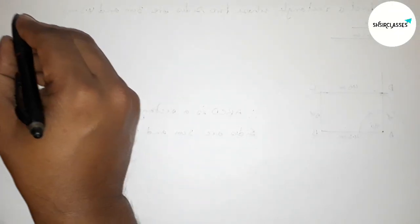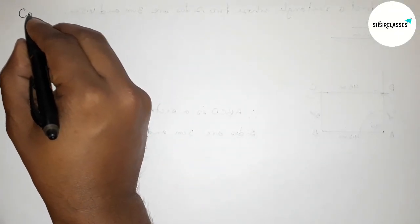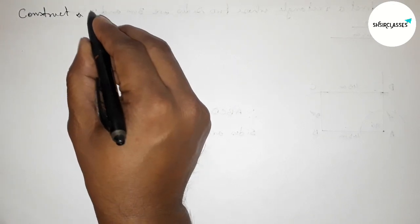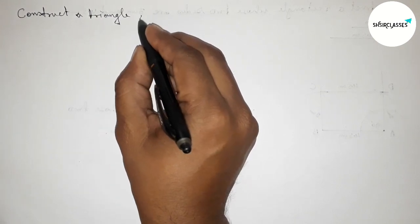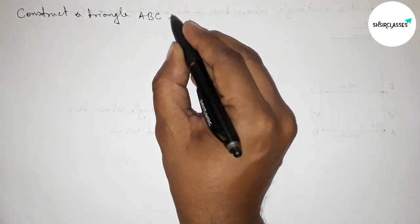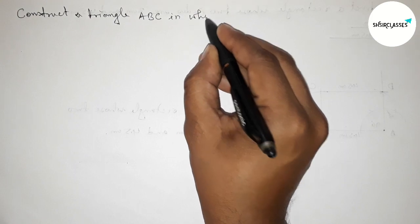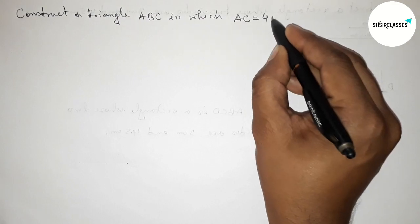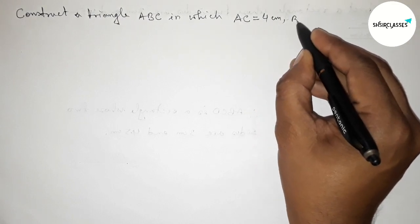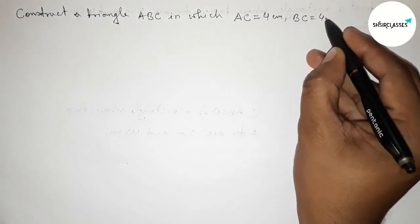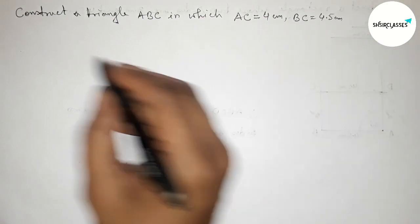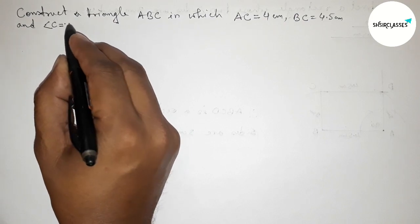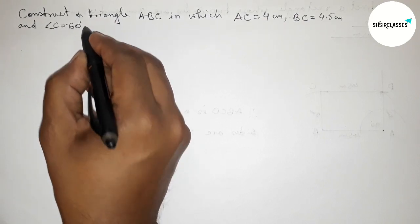Hi everyone, welcome to SI Share Classes. Today in this video we have to construct a triangle ABC in which AC equals 4 centimeter, BC equals 4.5 centimeter, and angle C equals 60 degrees. I'm going to construct this triangle in an easy way, so please watch the video till the end. Let's start.